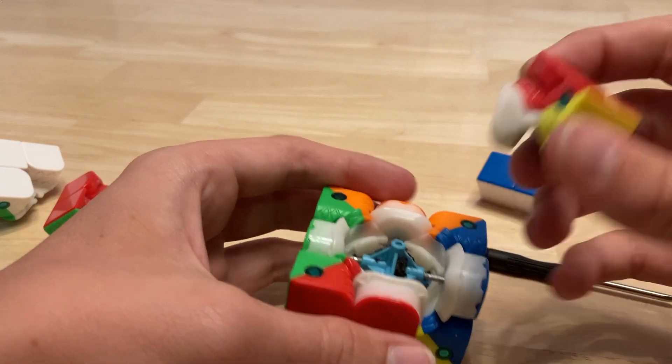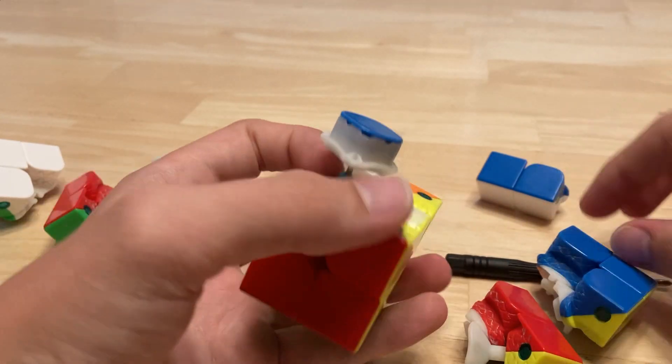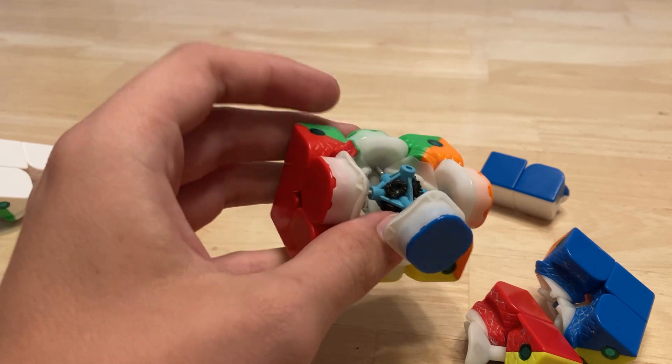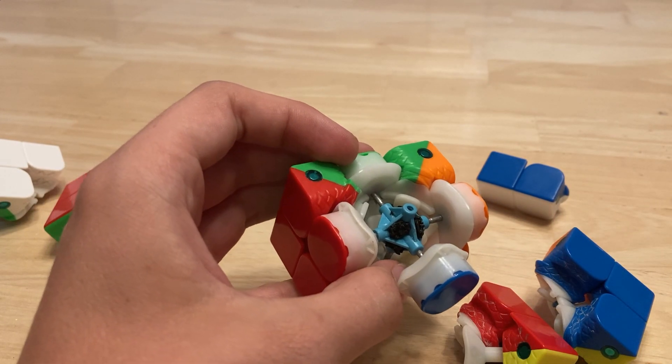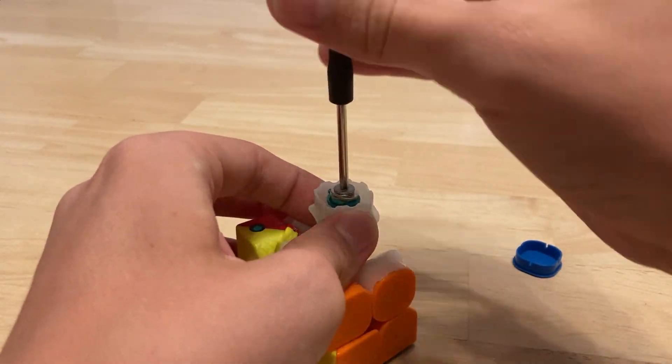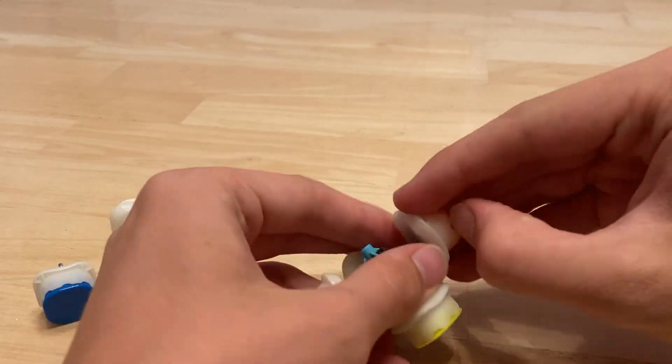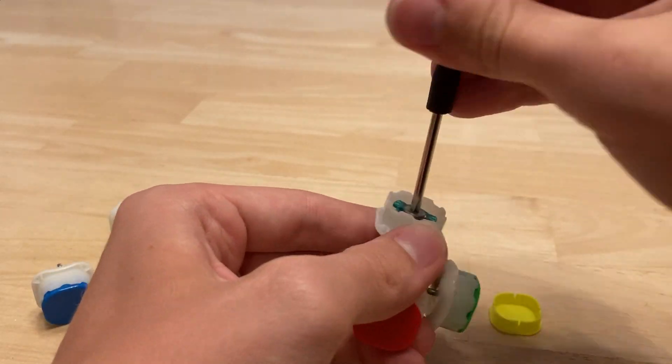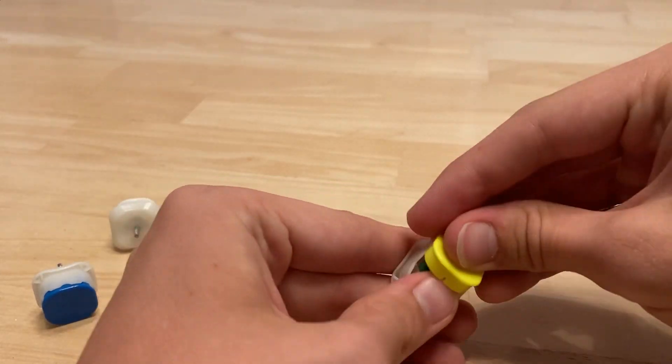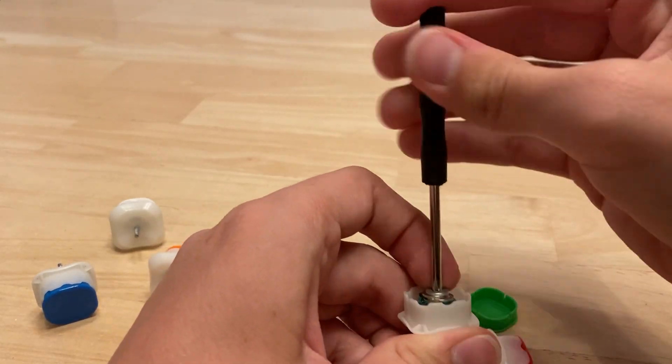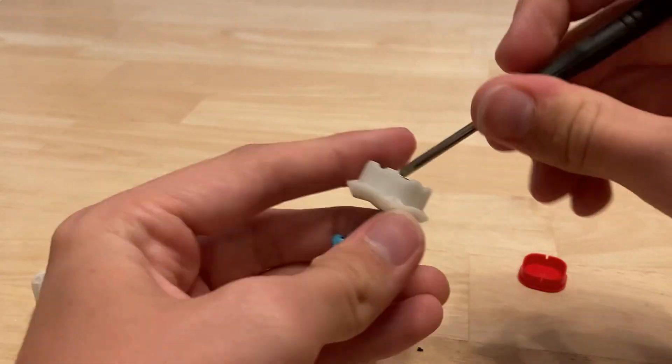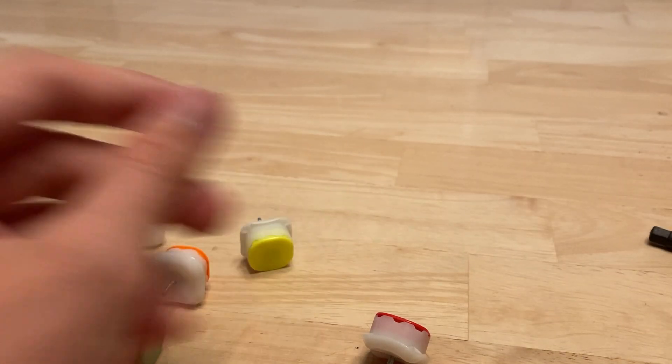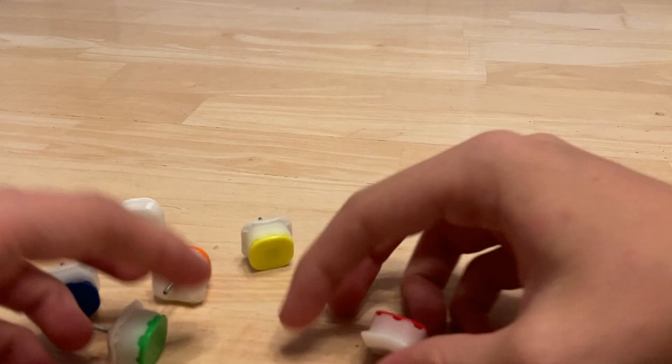The next thing you're going to want to do is the same thing for all five other sides. Ignore that black stuff right here, that's just something from a prototype version of what I'm about to do now. Alright, you can put this old core to the side. You won't need it anymore. We'll get back to these pieces later.